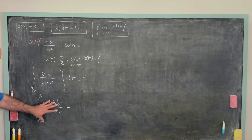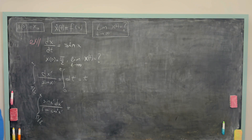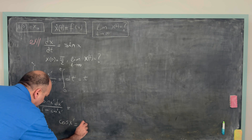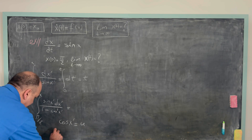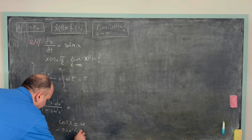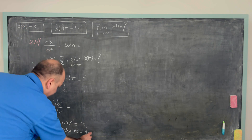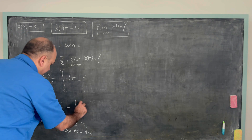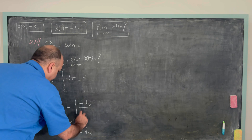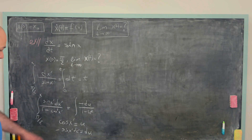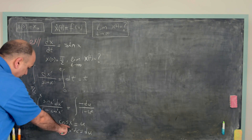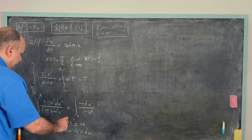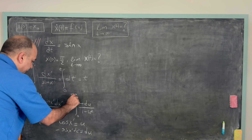Now I focus on the left integral. We make the u-substitution: let cos x' = u, so -sin x' dx' = du. The integral becomes -du/(1 - u²). The limits change: when x' = π/2, u = cos(π/2) = 0; the upper limit becomes cos x.